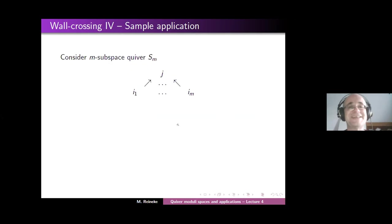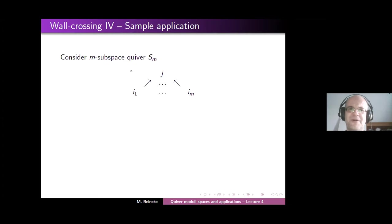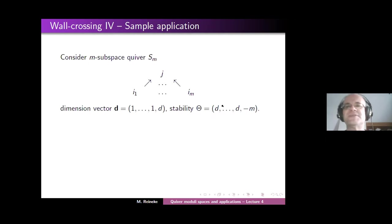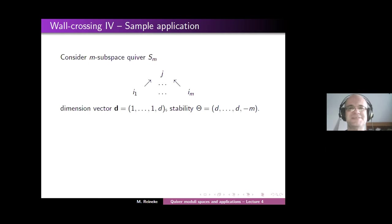Let's see a sample application — to Gromov-Witten theory. Let me come back to one example I omitted in my talk on Monday. Let's consider the so-called M-subspace quiver. It has M vertices I_1 to I_m pointing to a central vertex J. The dimension vector we consider: we put entry 1 on the lower row vertices and an arbitrary entry d on top. Let me choose a particular stability — what I call the canonical stability — in which case you might get Fano varieties.